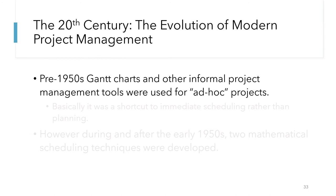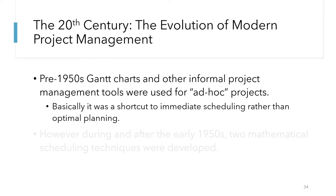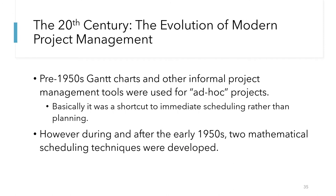While Gantt charts were popular for scheduling and project management, they weren't optimal for inter-task relationships. Often these Gantt charts were haphazardly used along with other informal project management tools for ad hoc projects. Those who know Latin know that ad hoc means 'for this' — basically these tools were used for immediate scheduling instead of optimal planning.